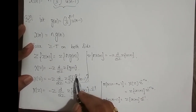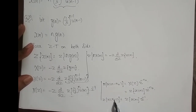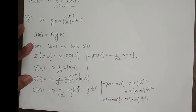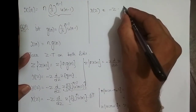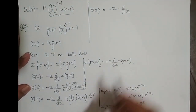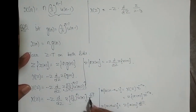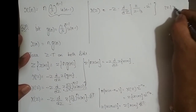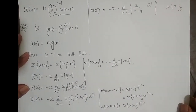Since both are n minus 1, I applied z power minus 1 here. So X of z equals minus z into d by dz of Z-transform of a power n, u of n is z divided by z minus a, where a is 1 by 3, into z power minus 1, with ROC magnitude of z greater than 1 by 3. The z power minus 1 from the time-shift and the z in the numerator cancel out, so I end up with X of z equal to minus z into d by dz of 1 divided by z minus 1 by 3, with magnitude of z greater than 1 by 3.